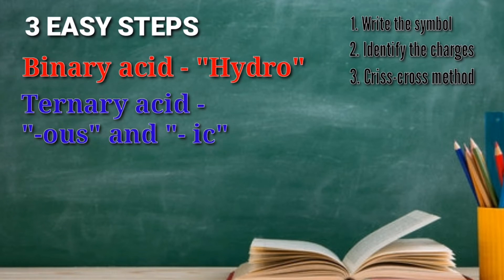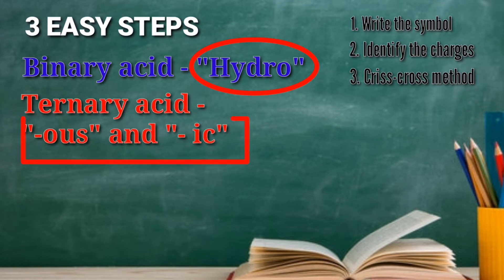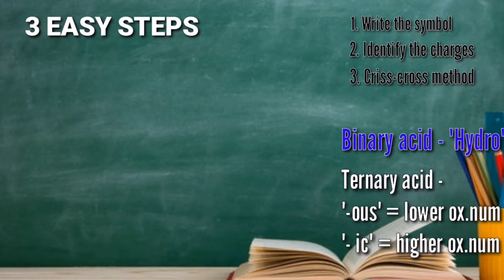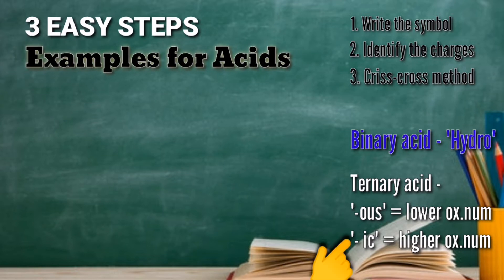Take note that the binary acidic compound has the word 'hydro' in it, while in ternary acidic compound, you can find the suffixes OUS and IC. OUS is for the lower oxidation number and IC is for the higher oxidation number.